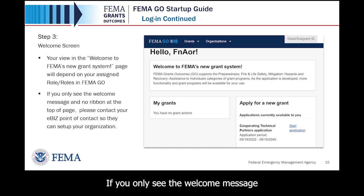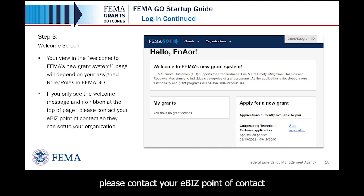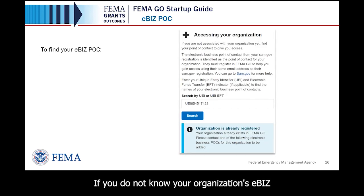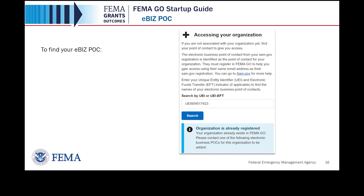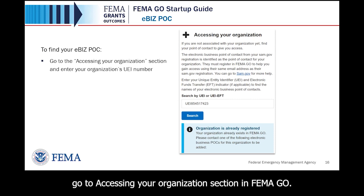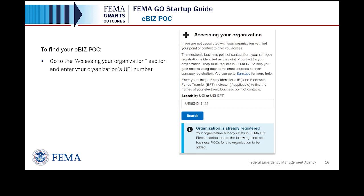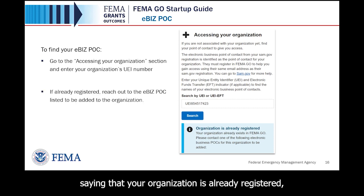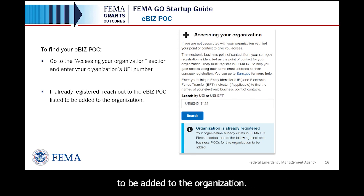If you only see the welcome message and no ribbon at the top of the page with grants and organization links visible, please contact your eBiz Point of Contact so they can set up your organization in the system. If you do not know your organization's eBiz Point of Contact, you can search for it within FEMA GO at the bottom of the welcome screen. Enter your organization's UEI number in the search field and select the search button. If a blue statement opens saying your organization is already registered, please reach out to your eBiz Point of Contact listed to be added to the organization.